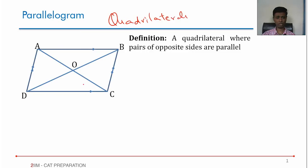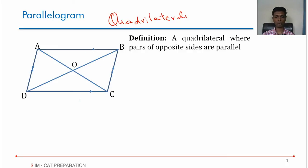A parallelogram is a quadrilateral where opposite pairs of sides are parallel. It has four sides and four vertices. These two sides are parallel, and these two are parallel.